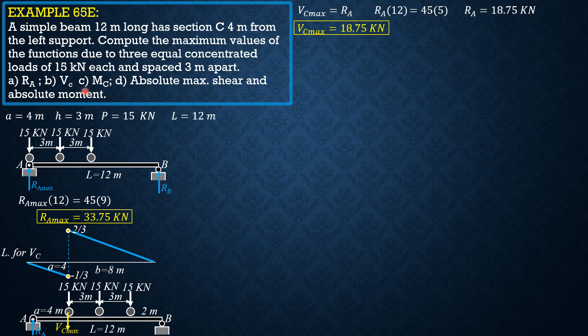For moment at C: since A = 4, and 4 = 12/3, this satisfies the criterion where either case 1 or case 2 controls. Case 1 is when the center load is over point C; case 2 is when the leftmost load is over point C.